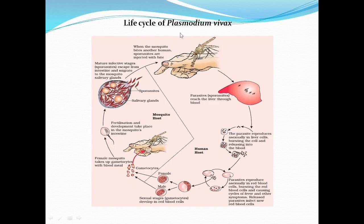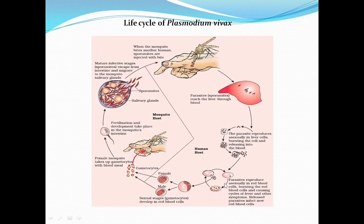Let us understand the life cycle of Plasmodium vivax with the help of this diagram. When the mosquito bites a human, the sporozoites are injected. The sporozoites reach the liver through the blood. The parasite reproduces asexually in liver cells, bursting the cells and releasing merozoites into the blood. The parasites then reproduce asexually in red blood cells, bursting the RBCs and causing cycles of fever due to release of haemozoin. Released parasites infect new red blood cells, repeating the cycle.